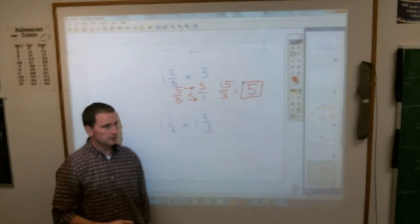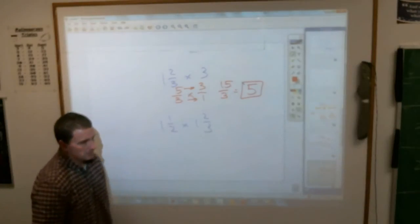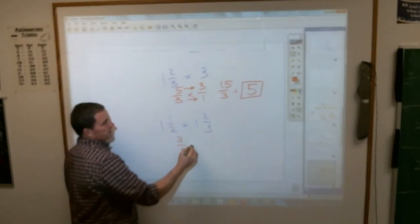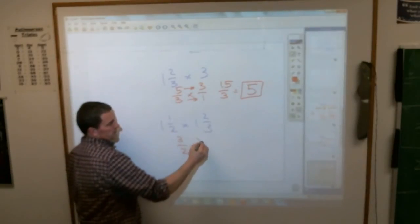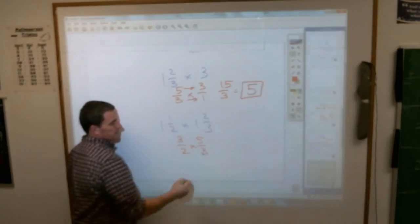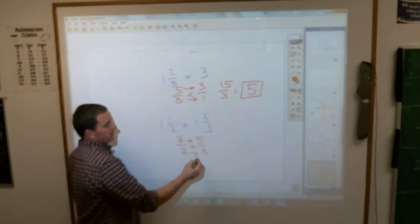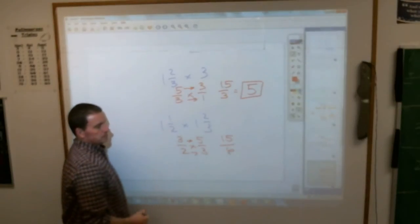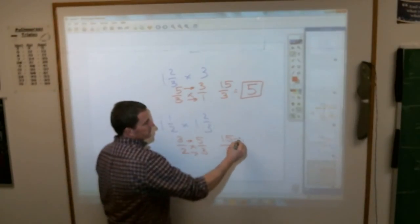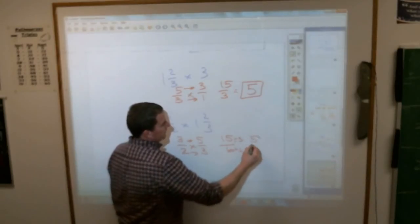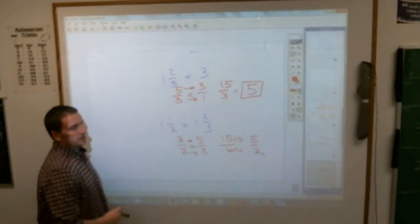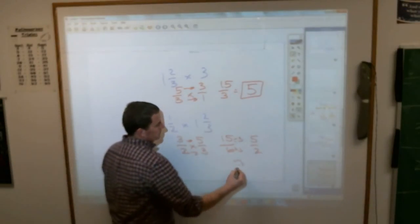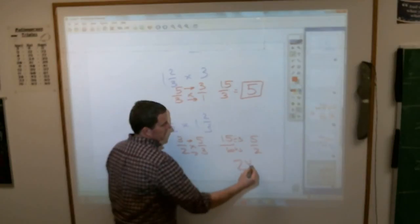You made these both improper, right? This is 3/2 times 5/3, correct? Multiplying across, you end up with 15/6. Reduce them—3 goes into both of them, so you divide them both by 3. You do get 5/2. As a mixed number, 5/2 is? Isabel? 2 and 1/2.